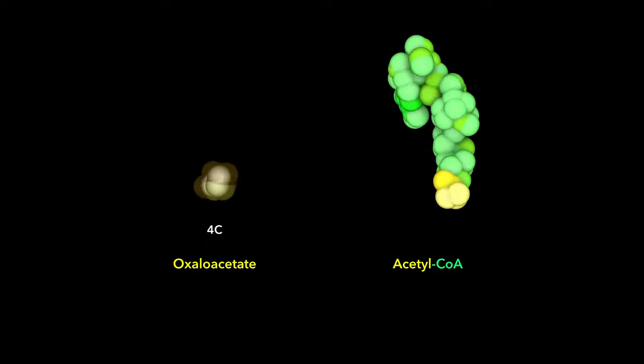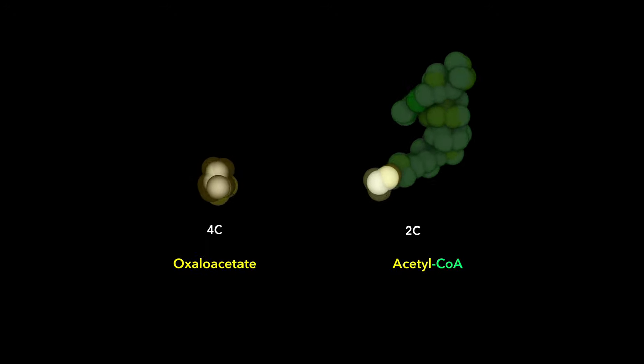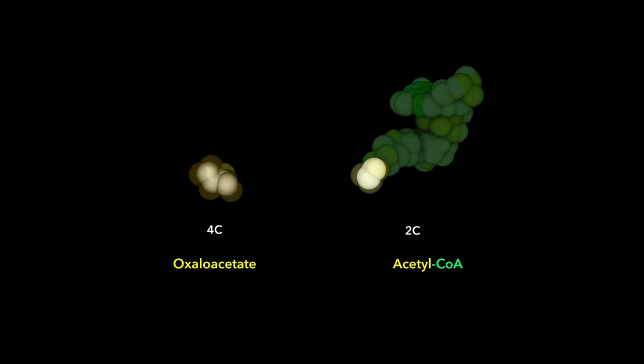The citric acid cycle starts with the end product of a previous cycle, the four-carbon molecule oxaloacetate. New carbon enters from glycolysis in the form of acetyl-CoA, a two-carbon acetyl group attached to coenzyme A.